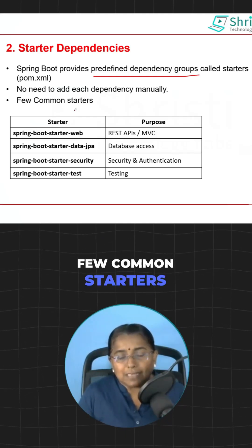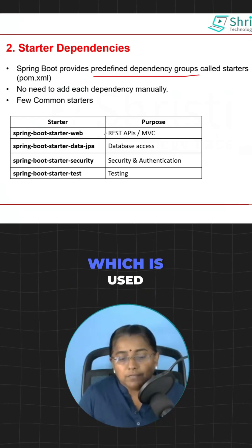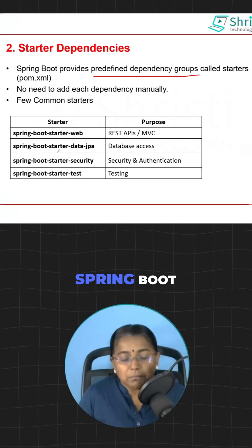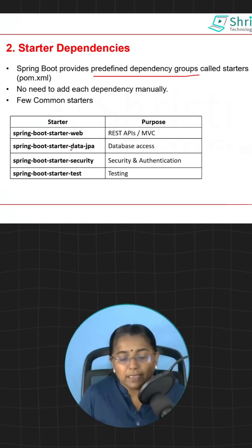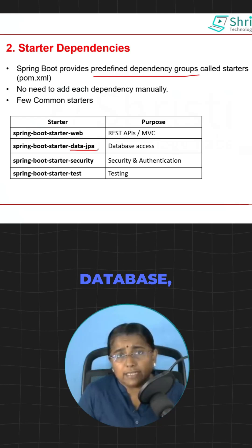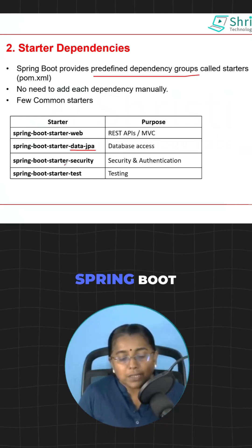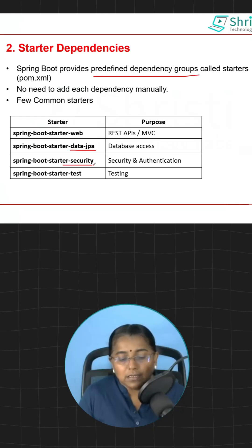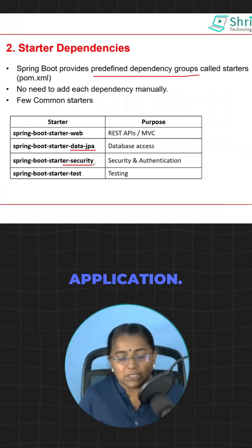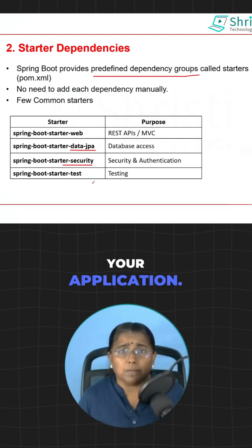A few common starters are: spring-boot-starter-web, used for REST APIs and web applications; spring-boot-starter-data-jpa, used for performing CRUD operations and database access; spring-boot-starter-security, for adding authentication and authorization to your application; and spring-boot-starter-test, for testing your application.